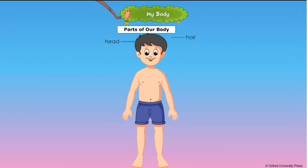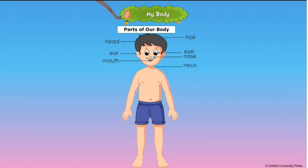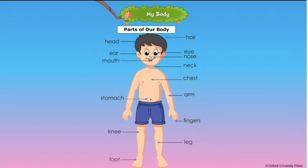The parts of our body are: Head, Hair, Ear, Eye, Nose, Mouth, Neck, Chest, Arm, Stomach, Fingers, Knee, Leg, Foot, and Toes.